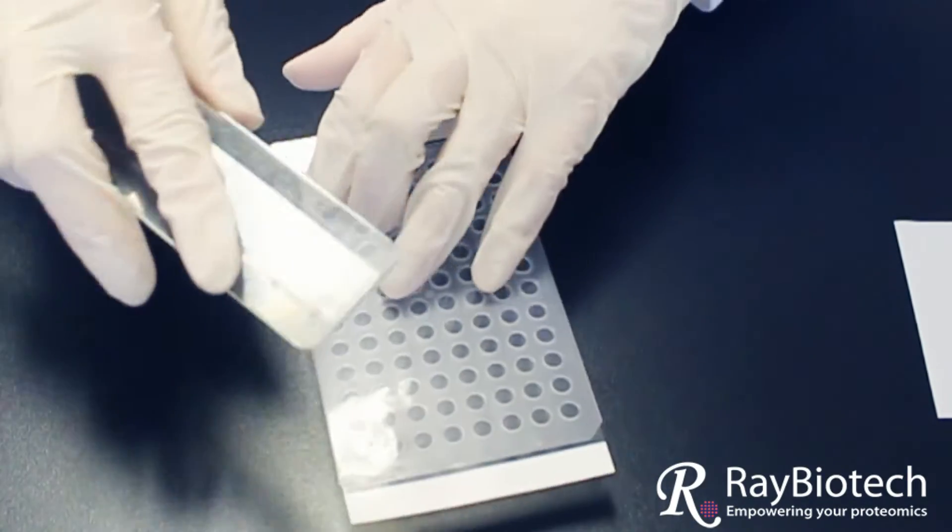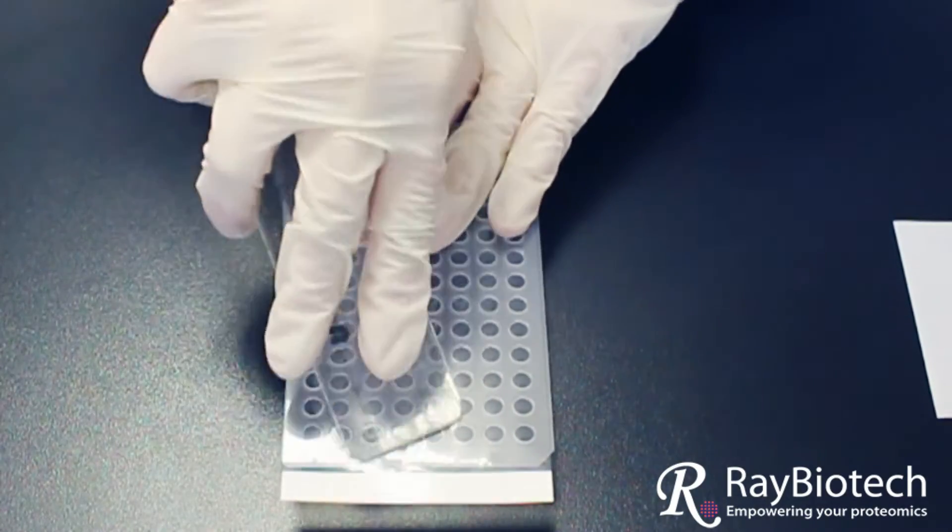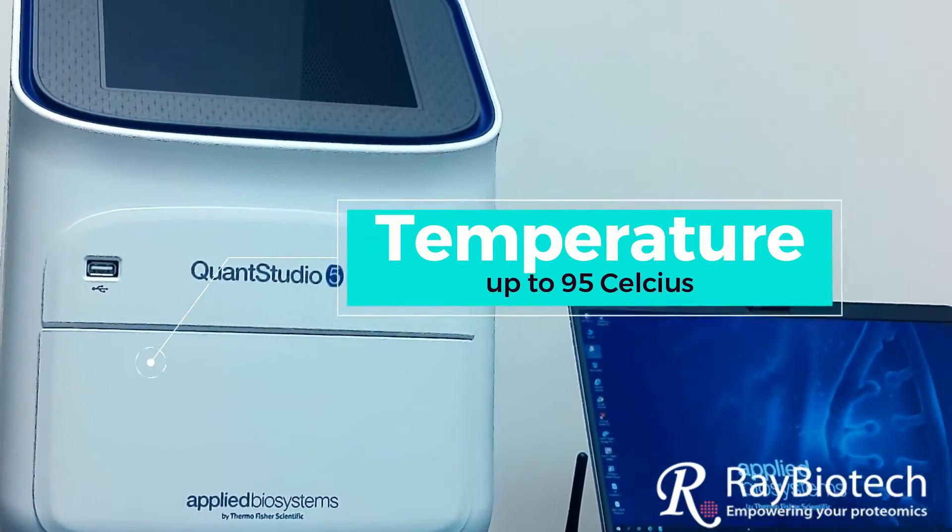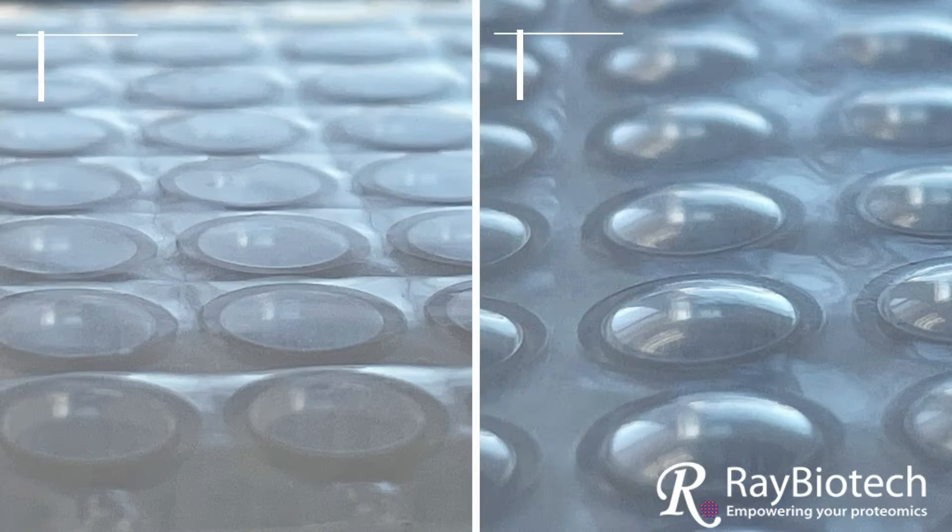The ruler should be used to press the film firmly against the edges of the wells. During the reaction, the thermocycler will reach up to 95°C. Expansion of air will place pressure on the seal.